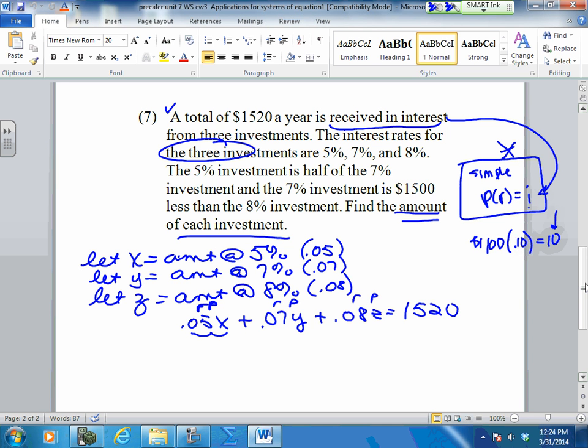Now we go to this guy. The 5%, let's go back to your variable. What's our variable at 5%? X. X equals half of the 7. What's the 7? Y. So there's another equation.